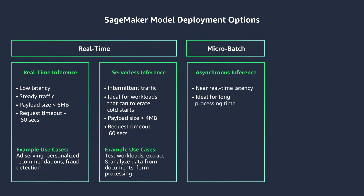Your third option is SageMaker asynchronous inference. It's perfect when you want to queue requests and have large payload sizes up to 1 GB or long processing times up to 15 minutes. You can scale down your endpoints to zero when there are no requests to process, which makes it a very cost-effective option. A few examples are computer vision and object detection, and a common theme with this choice is the ability to wait on inferencing or a response.